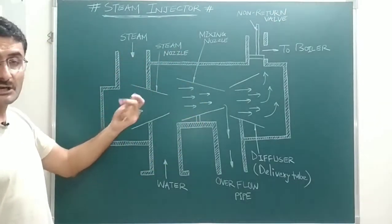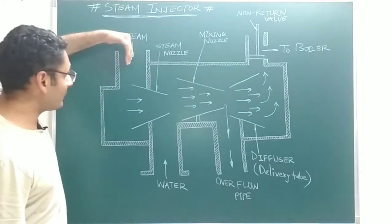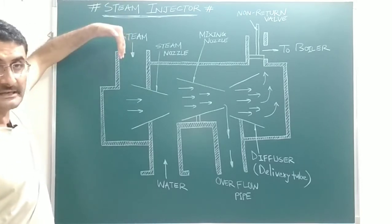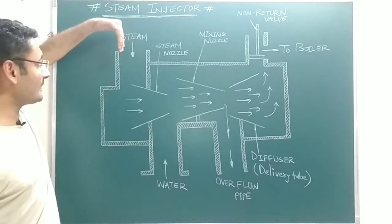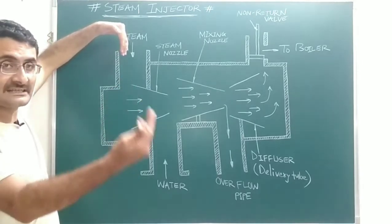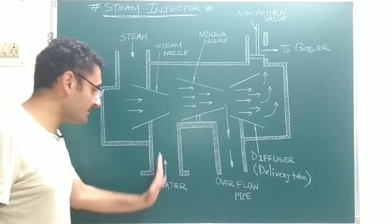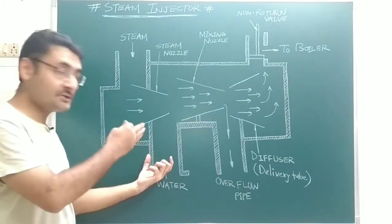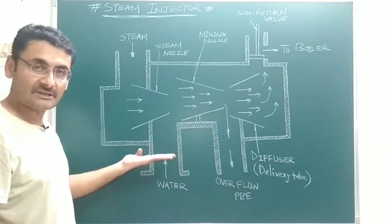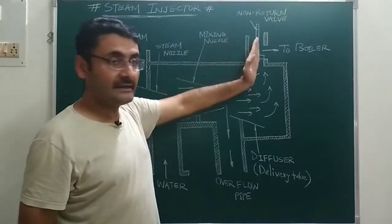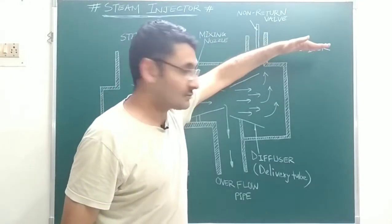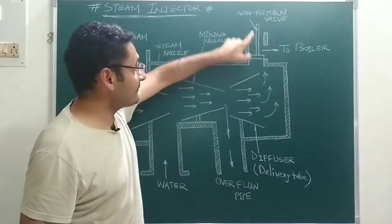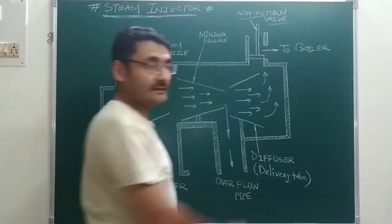Now, the construction: the steam injector has two inlets. Through the first inlet, exhaust steam or live steam from the boiler enters. Through the second inlet, water is supplied — water that needs to be fed into the boiler at increased pressure. There is one outlet connected to the boiler to supply high-pressurized water.